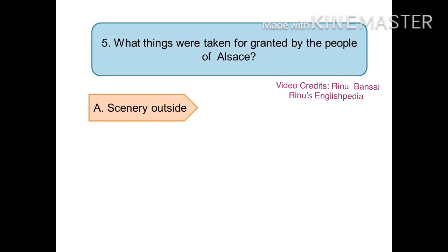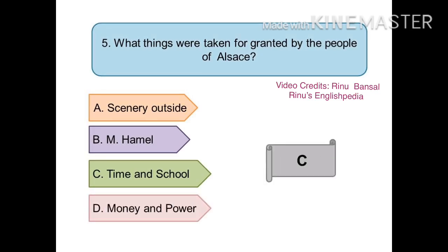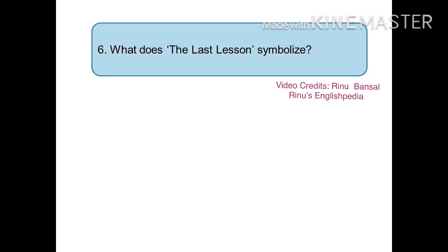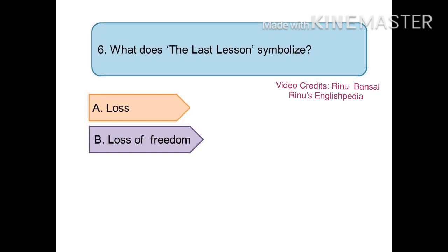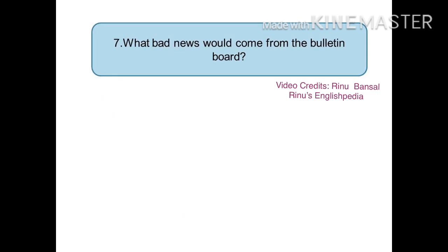The next question is: what things were taken for granted by the people of Alsace? The options are (a) the scenery outside, (b) Monsieur Hamel, (c) time and school, or (d) money and power. The right answer is (c) time and school. The sixth question is: what does 'The Last Lesson' symbolize? The options are (a) loss, (b) loss of freedom, (c) loss of language, or (d) loss of language and freedom. The right answer is (d) loss of language and freedom.